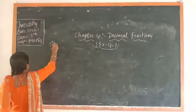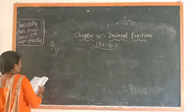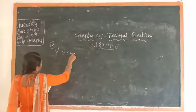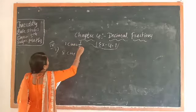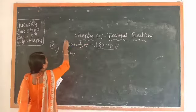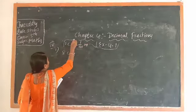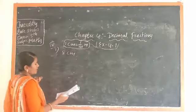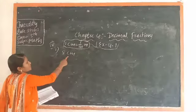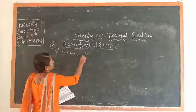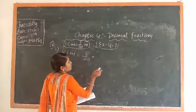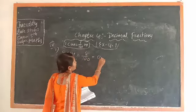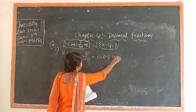Fourth section, first question: 8 centimeter. Write the formula first — 1 centimeter is equal to 1/100 meter. So 8 centimeter is 8/100. That gives 0.08 meter.